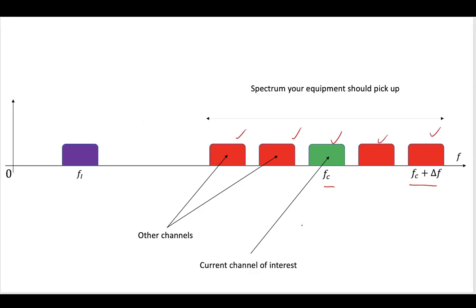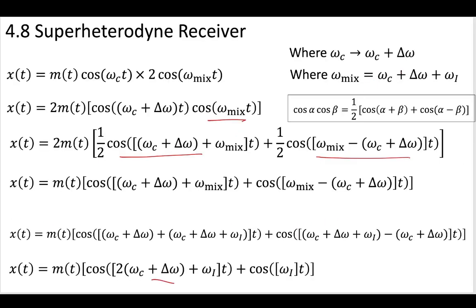We can multiply it together. We can take our modulated signal up here, multiply it with that omega mix, that mix signal that has some intermediate amount.